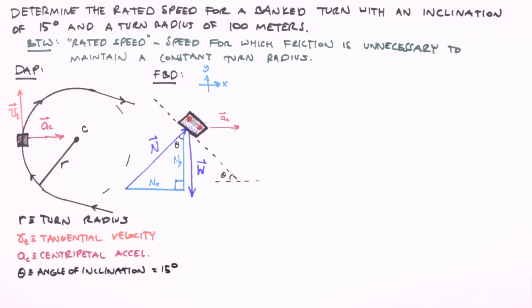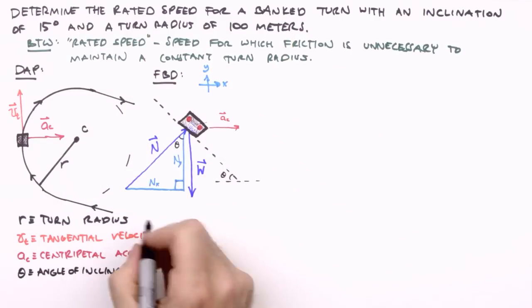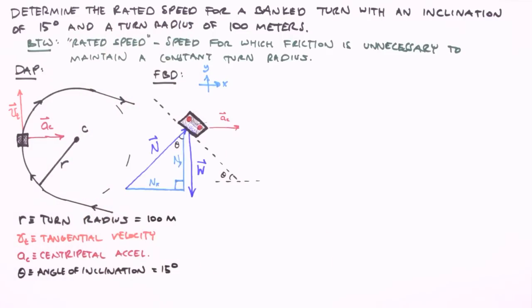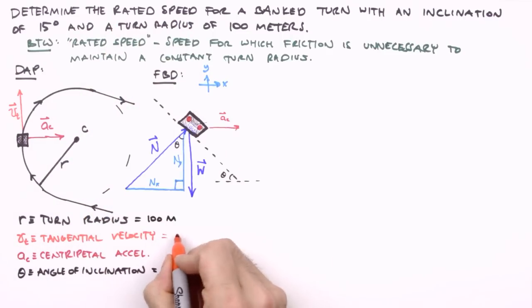Now our turn radius is also given to us in the wording of our problem. 100 meters. The tangential velocity is the rated speed of our turn, which makes it the unknown variable. Our task is to determine its value.